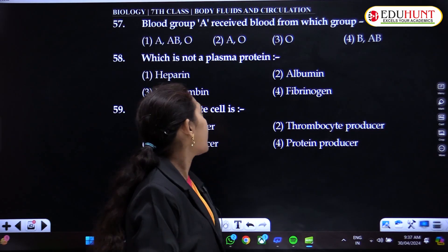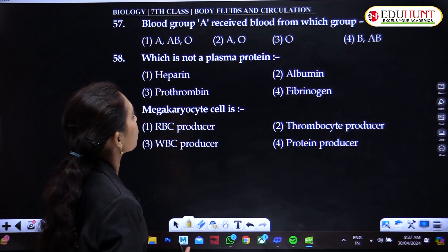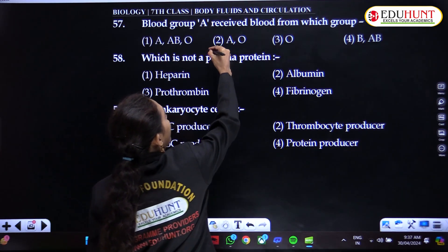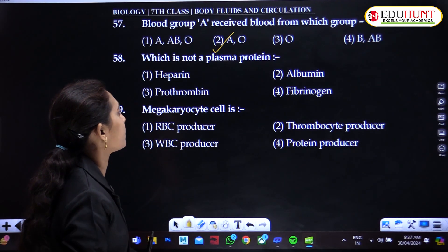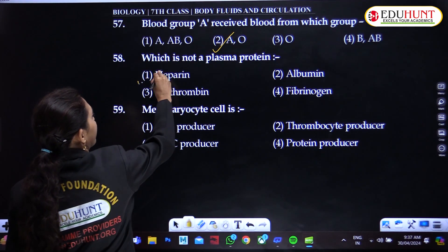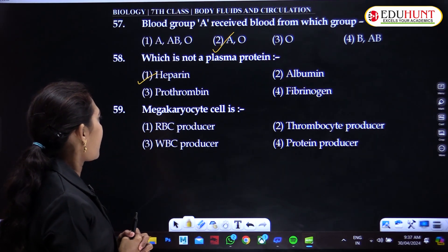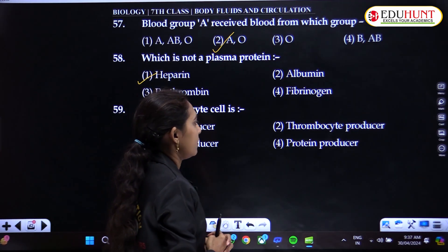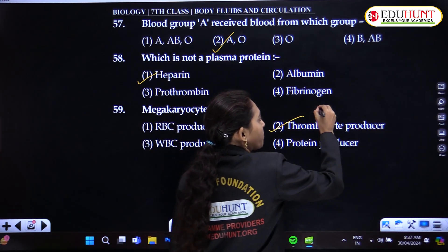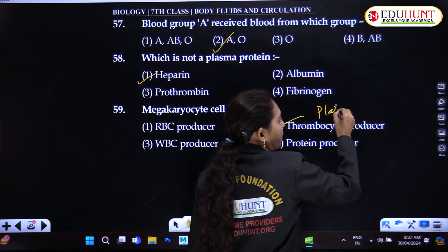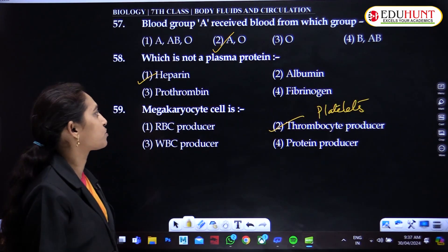Blood group A can receive blood from groups A and O. Heparin is not a plasma protein. Megakaryocyte is a thromboplastin-producing cell; megakaryocyte produces platelets.